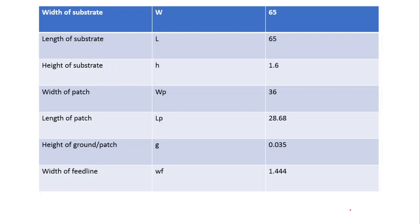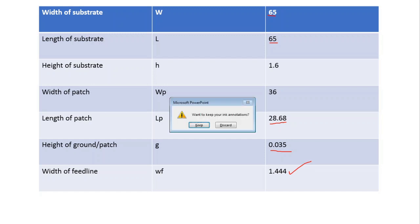The design parameters are as follows: the width of the substrate, denoted by W, will be 65 mm; the length of the substrate will also be 65 mm; the height of the substrate, denoted by H, will be 1.6 mm and we will use the FR4 substrate. The width of the patch will be 36 mm, the length of the patch will be 28.68 mm, the height of the ground and patch will be 0.035 mm, and the width of the feed line will be 1.44 mm.